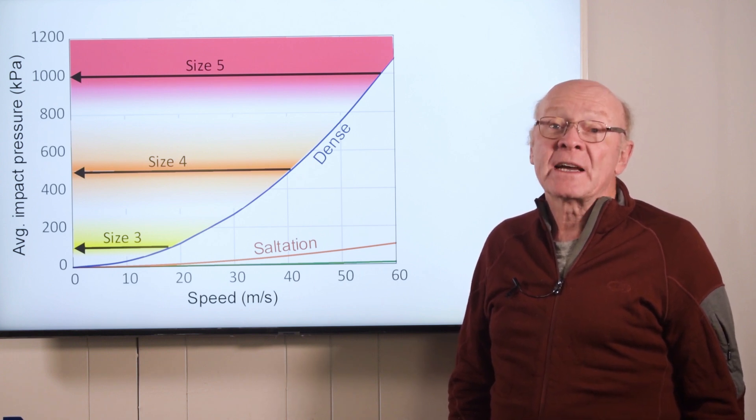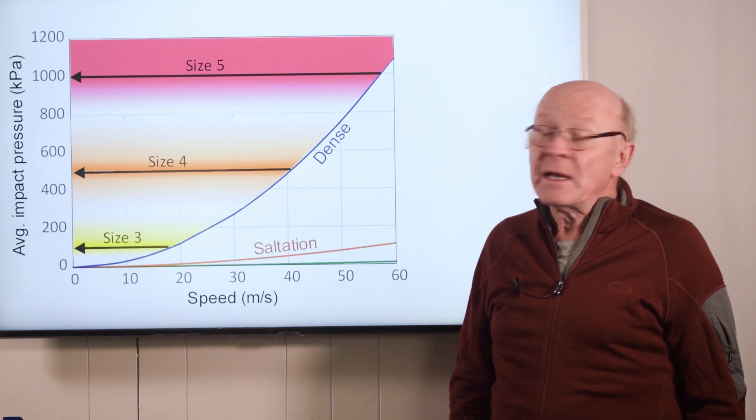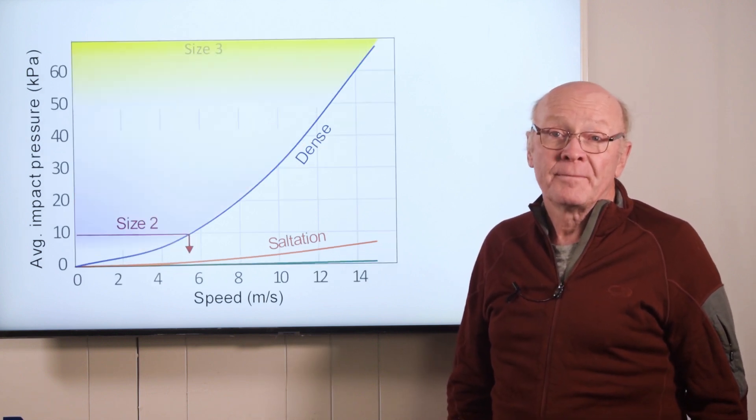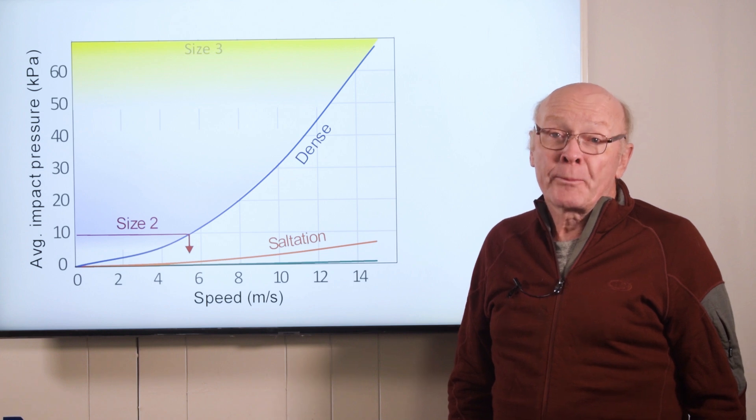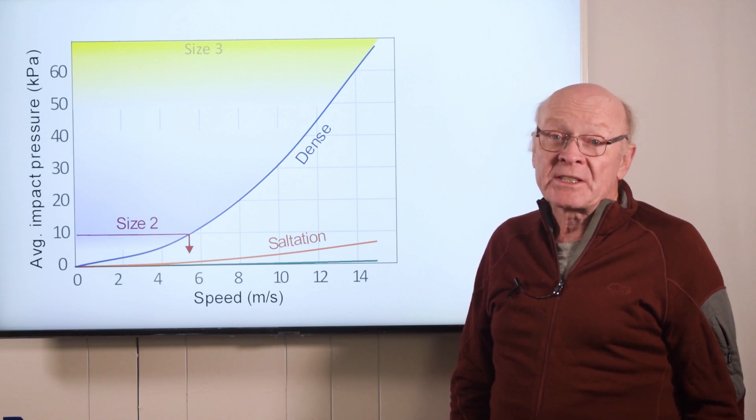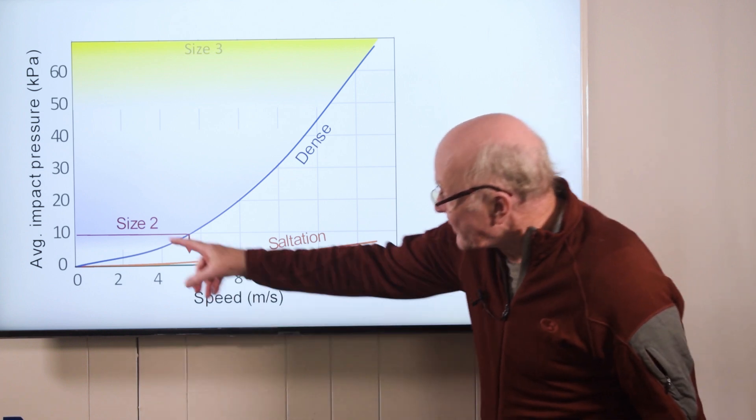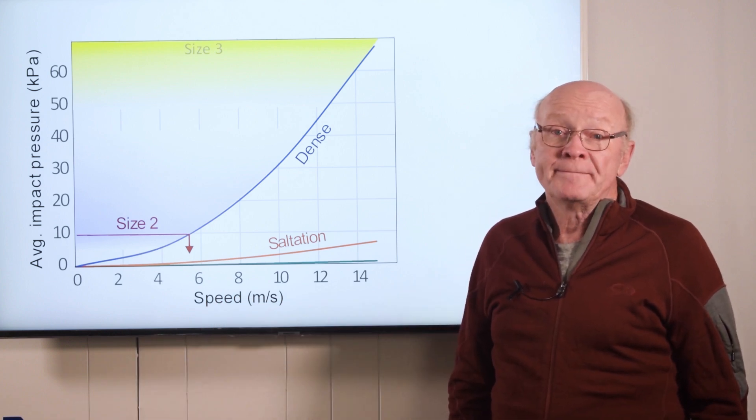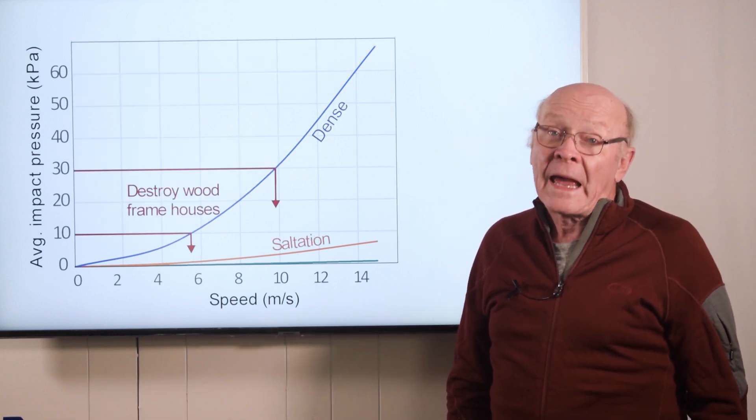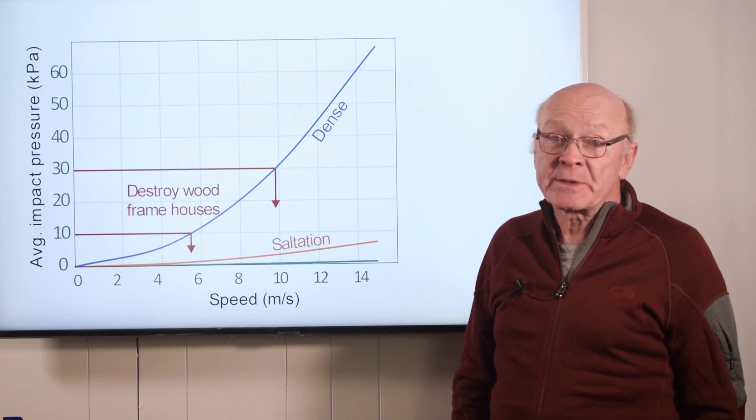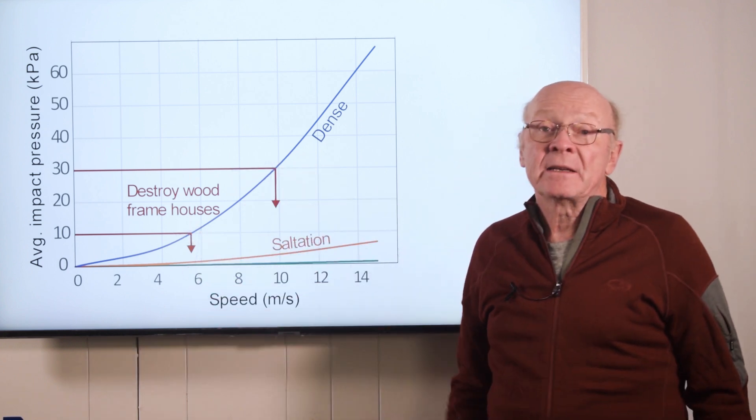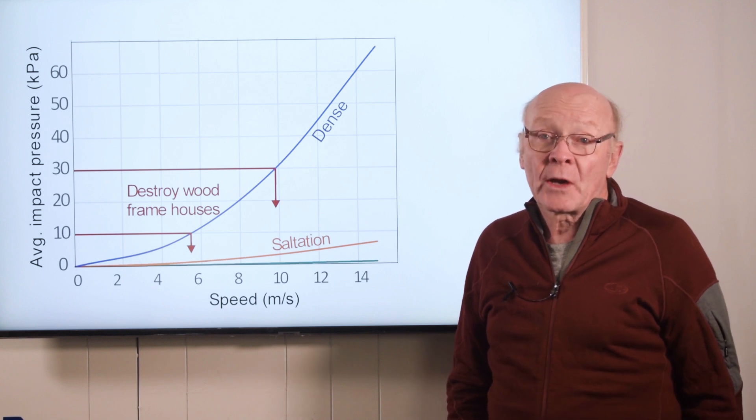To see the impact pressure for size 2 avalanches, I'll zoom in to the lower left part of the graph. We see that the impact pressure typical of size 2 avalanches can be achieved by a speed of about 6 meters per second in the dry dense flow. And at a speed of about 10 meters per second, perhaps as low as 6 meters per second, the dry dense flow can destroy wood frame houses.